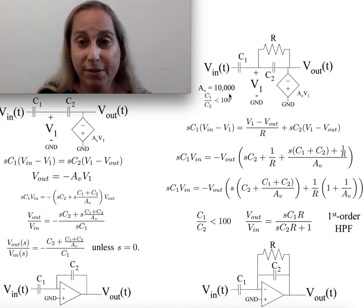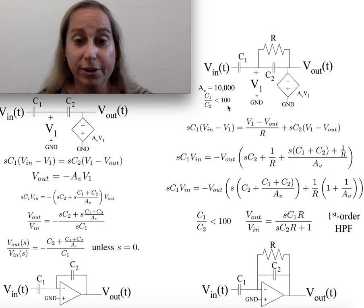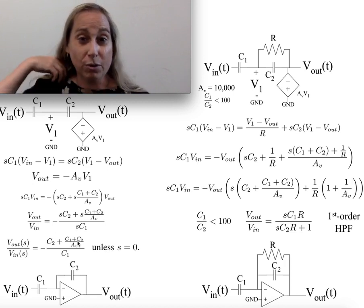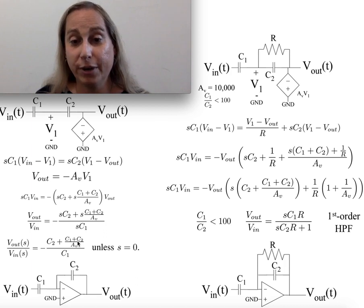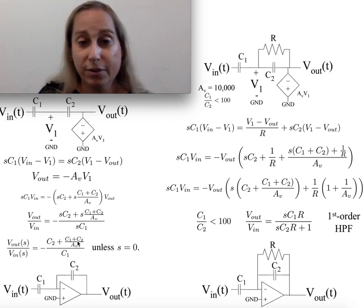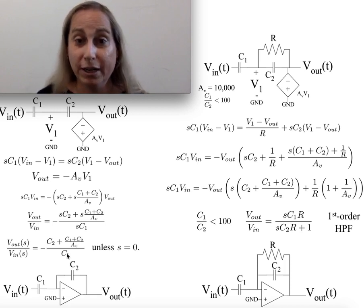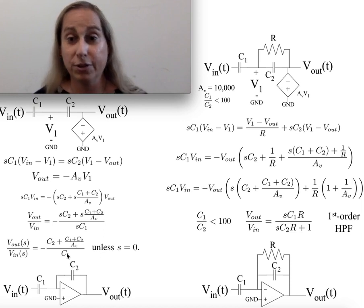So if I have something where the gain is 100,000 and the ratio is like 100, well, this error is going to be maybe 1% or less in that situation. And so the ideal solution of C2 over C1 is actually probably a pretty good approach, depending on what constraints for the circuit you're building.